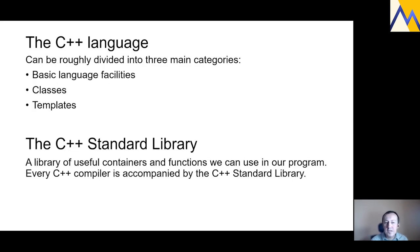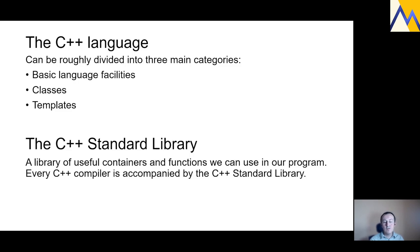Let's look at the C++ language first. The C++ language parts can be roughly divided into three main categories: basic language facilities, and abstraction mechanisms such as classes and templates. Those are the main categories that make up the C++ language itself.